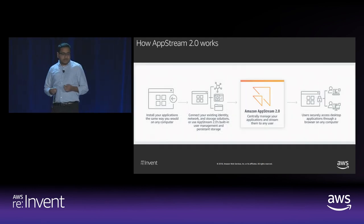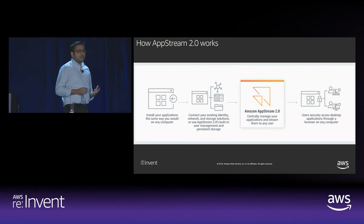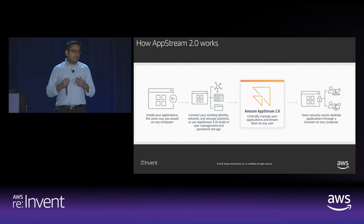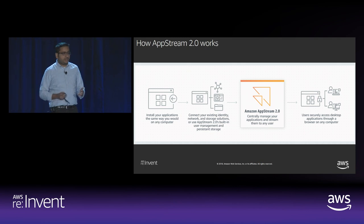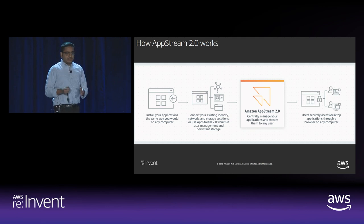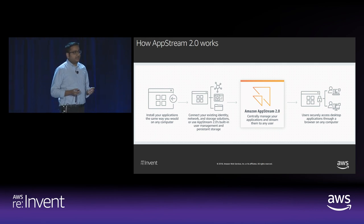Basically, you install your applications in an admin desktop just like you normally would, and then we use your image containing your applications to launch instances that seamlessly connect to your network and storage solutions. You can enable your users to access their applications using your existing identity solutions — no need to migrate your network, storage, or identity resources. You manage your applications centrally, patch or upgrade only once, and your users instantly receive the updates.